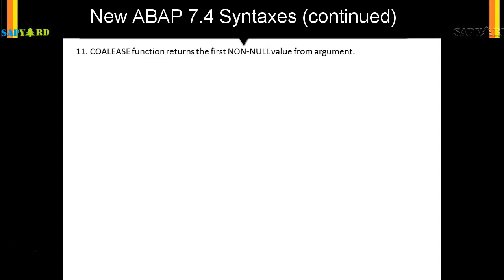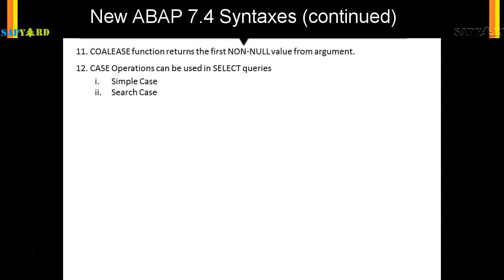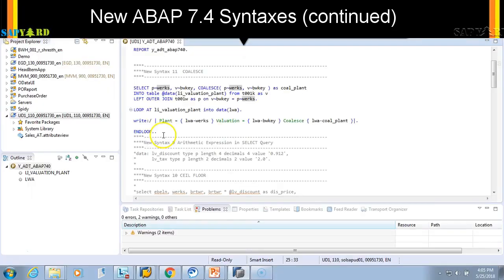Let's continue to the next feature: the CASE operation. Many times we pull data and then do the CASE inside a loop after we pull data, but with 7.4 you can do the CASE operation during the SELECT. There are two types of cases — one is called a simple case and one is called a search case. Let's go into the system and check our code.